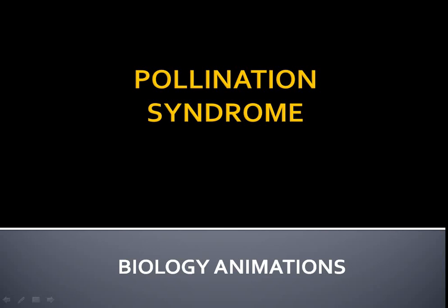Hello everyone, welcome to biology animations. Today's topic is about pollination syndrome. Before moving to the slide, we should know what pollination syndrome is. Sometimes a particular plant is pollinated by a particular pollinator, and in turn, a particular pollinator visits a particular plant. From that, a co-evolution is happening and a specialization is done. This is known as pollination syndrome.